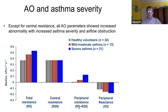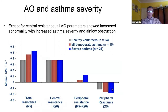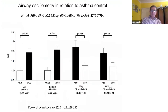If you look at the peripheral resistance between 5 and 20 hertz — the difference between R5 and R20 — you can see that also proportionately increases. And if you look at peripheral airway reactance or compliance, that also shows a commensurate change in the negative direction as you go from healthy to mild to moderate to severe.